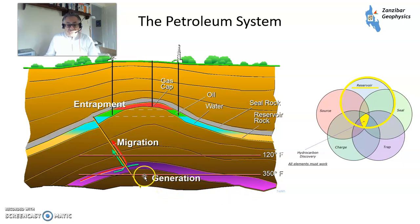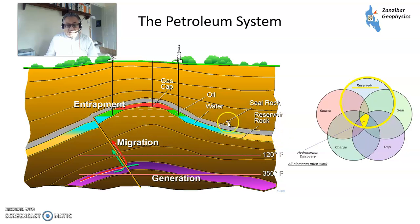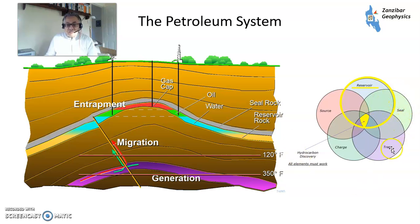Here's a petroleum system. You've got a source rock, where hydrocarbons are generated in the first place, then you've got migration — hydrocarbons move out of the source rock. You have a trap, and a seal to keep hydrocarbons in the trap. This is the video on reservoirs, the container where hydrocarbons are stored. For a petroleum prospect to work, all of these — reservoir, seal, trap, charge, and source — have to work in the right sequence.